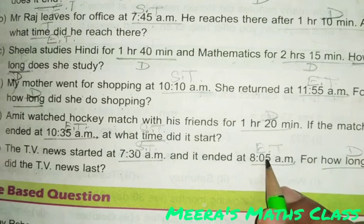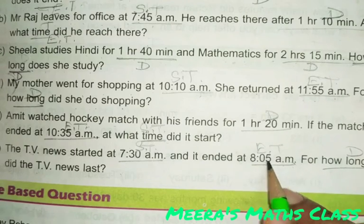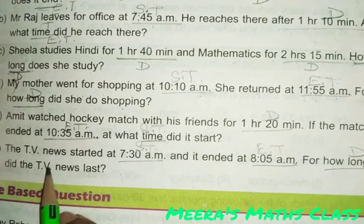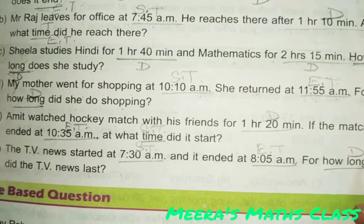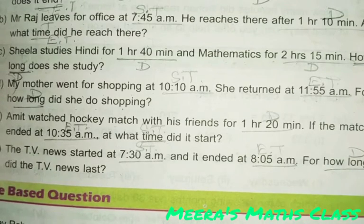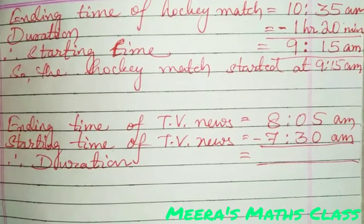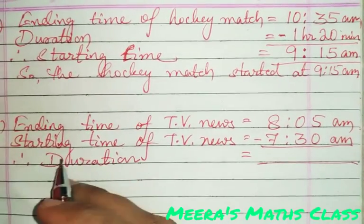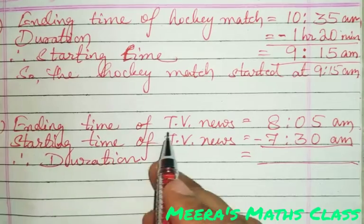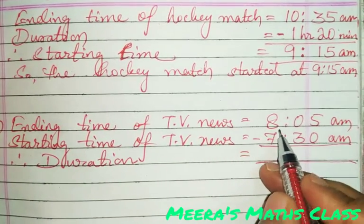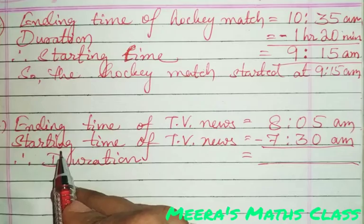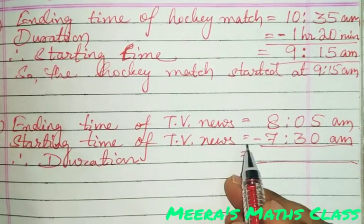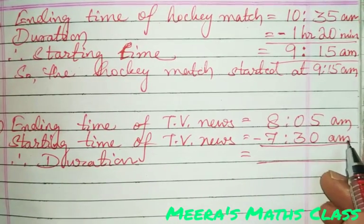So the starting time is given and the ending time is given. What is asked is: how long did the TV news last? That means we need to find the duration. Leave two lines and write: ending time of TV news = 8:05 AM, starting time of TV news = 7:30 AM.